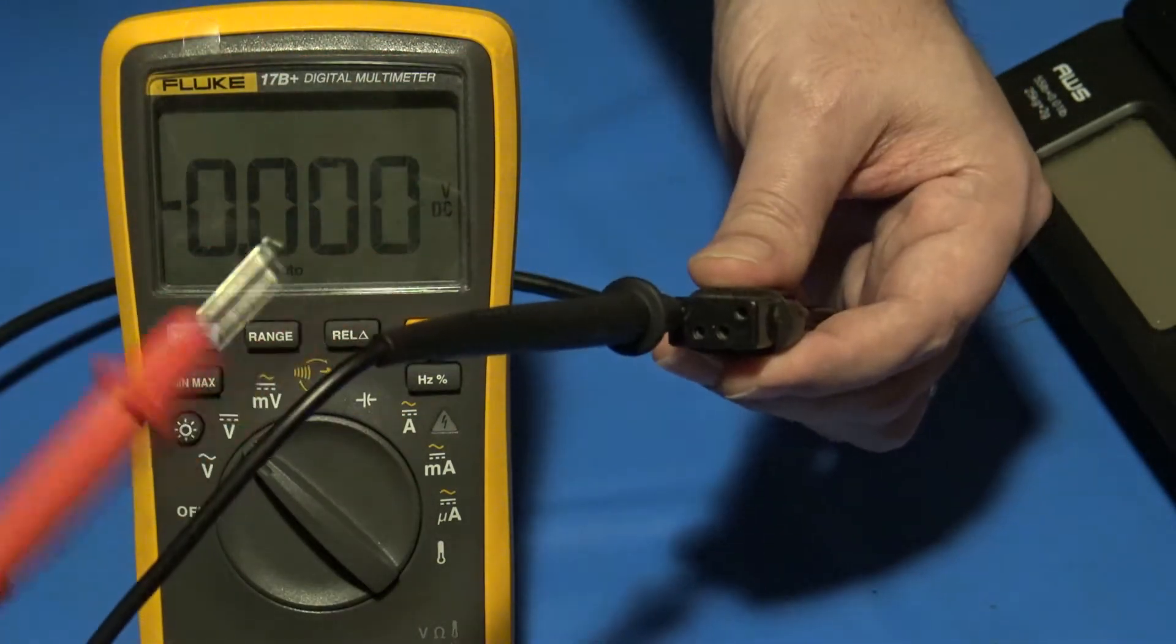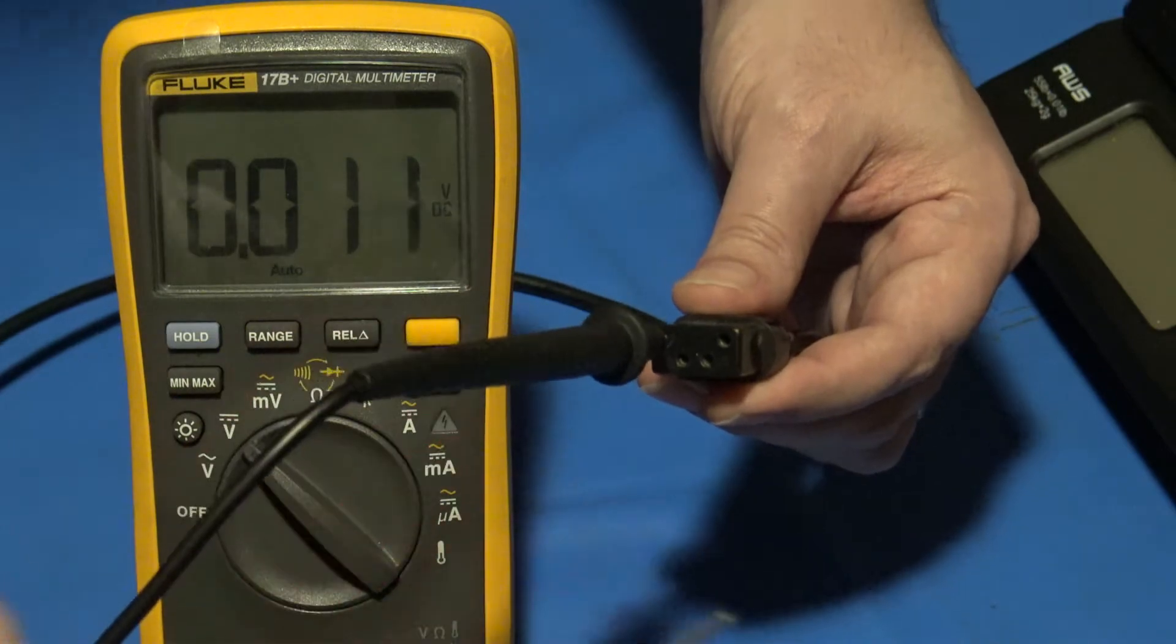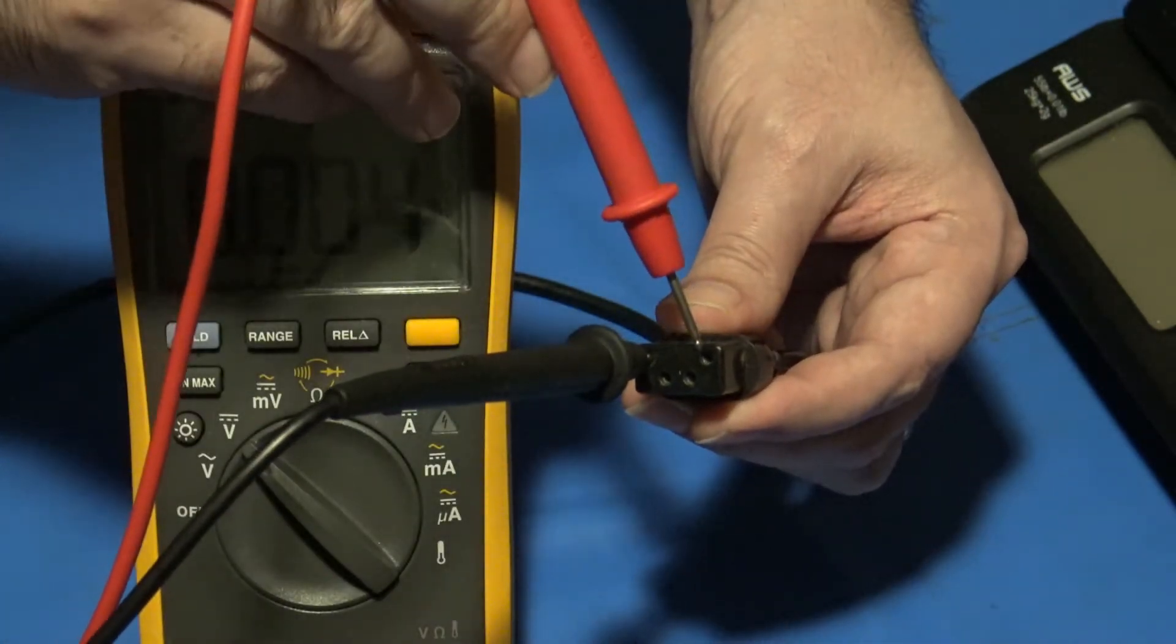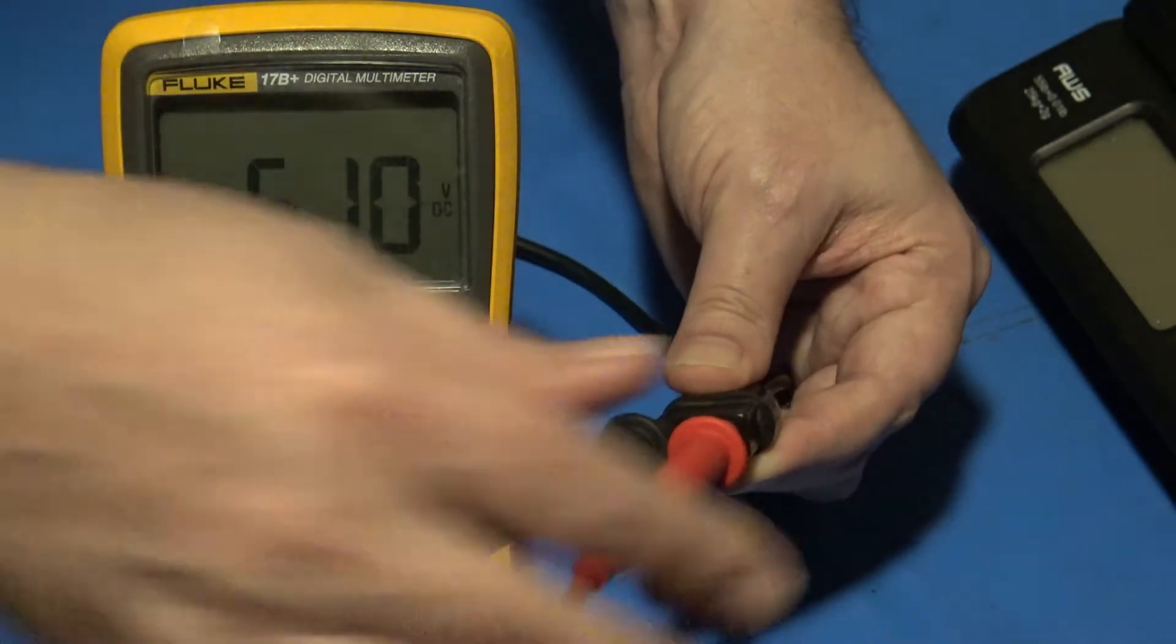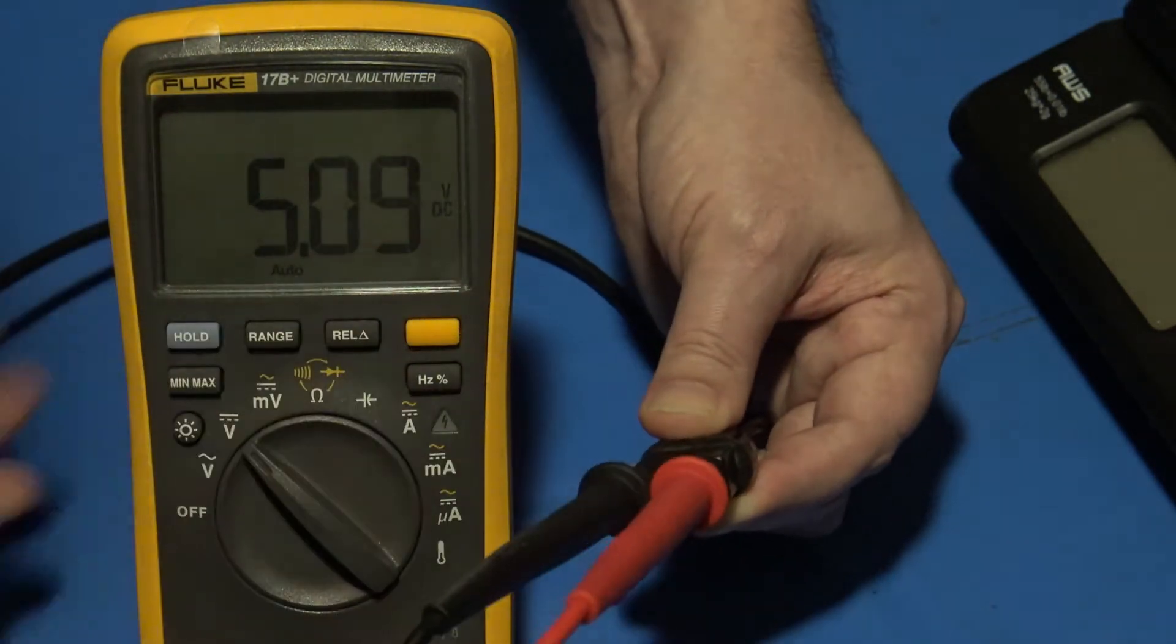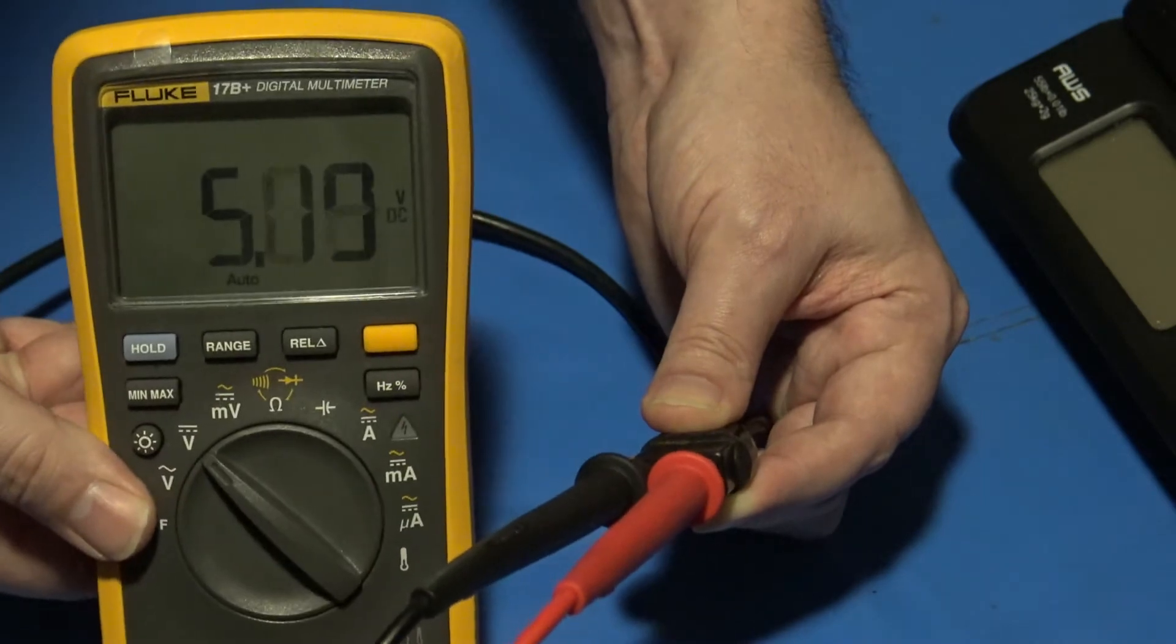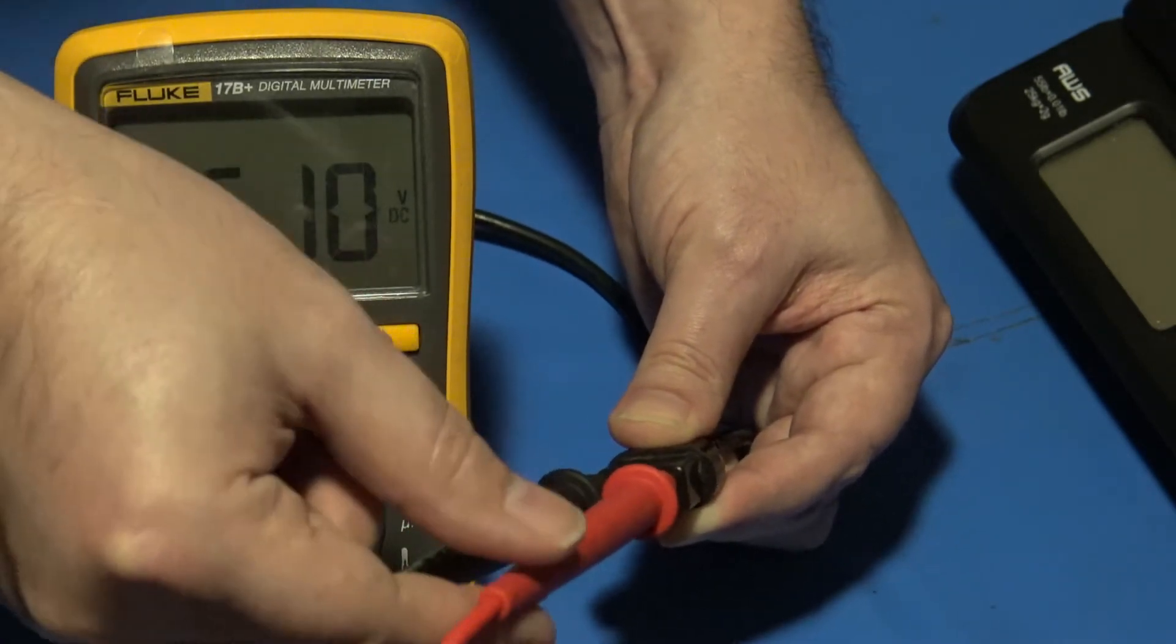I'm going to take the red probe and check the positive five volts, which is the next pin to the opposite side on the plug. You'll see that when I connect that in there, I am reading right at 5.09 volts.